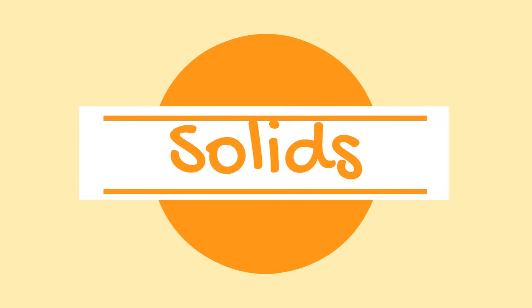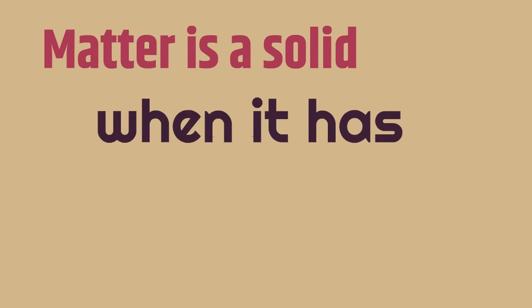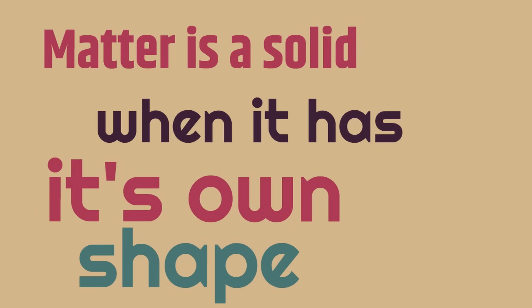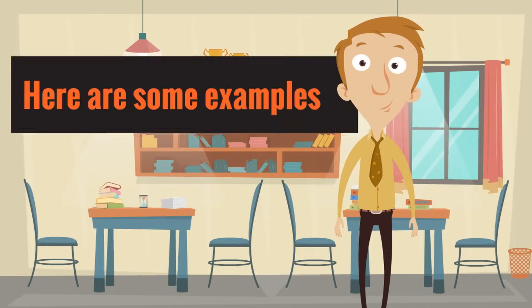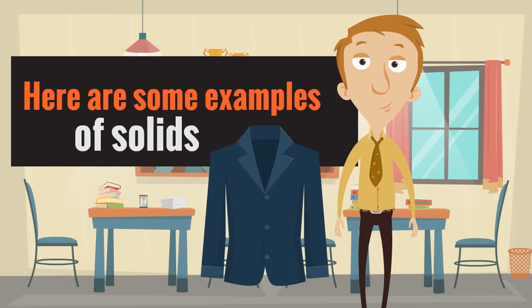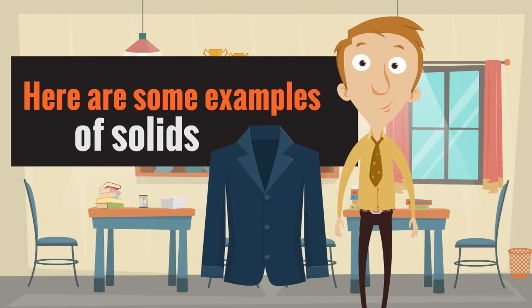We're going to start with solids. Matter is a solid when it has its own shape. Here are some examples of solids. Here is a coat. A coat is an example of a solid — it has its own shape. It's the shape of a coat, but it has its own shape. It's a solid.